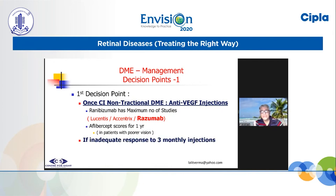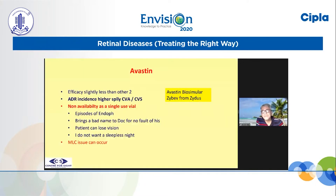Aflibercept does not necessarily score over Ranibizumab, except in very poor patients, and that too only for the first year — as the PROTOCOL T study showed us. Avastin is frankly a wonderful drug, but since it is not available as single-use and we have had issues with endophthalmitis, I have given up using Avastin. Avastin can be used provided you have very sure compounding pharmacies.